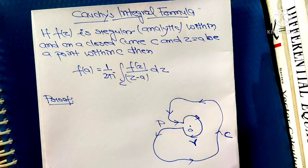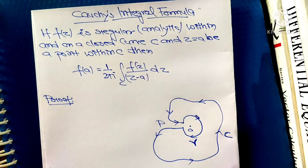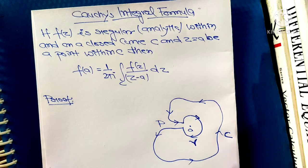In today's video I am going to prove Cauchy's integral formula. Let's see the statement: if f(z) is regular or analytic within and on a closed curve C, and z equals a is a point within C, then f(a) equals 1 upon 2πi times the integral over C of f(z) upon z minus a dz.